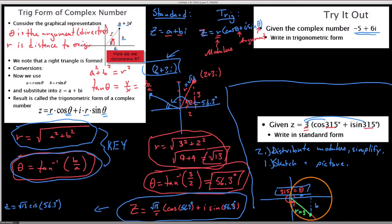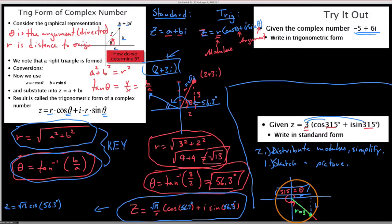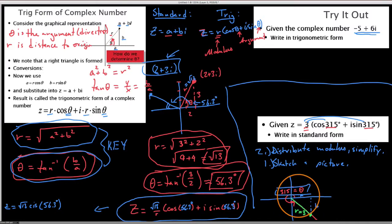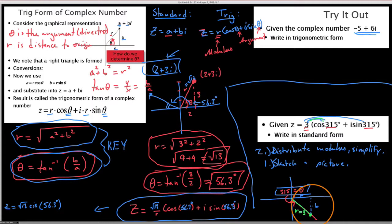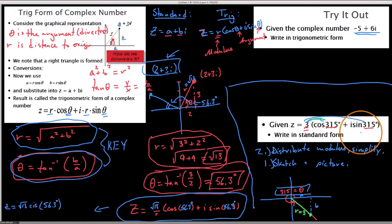If we want to solve for a, cosine of theta equals a over three, so a equals 3 cosine theta — that's the x component. For b, sine of theta equals b over three, so b equals 3 sine of the direction angle, which is 315 degrees. This is the same thing you get when you distribute the modulus through.